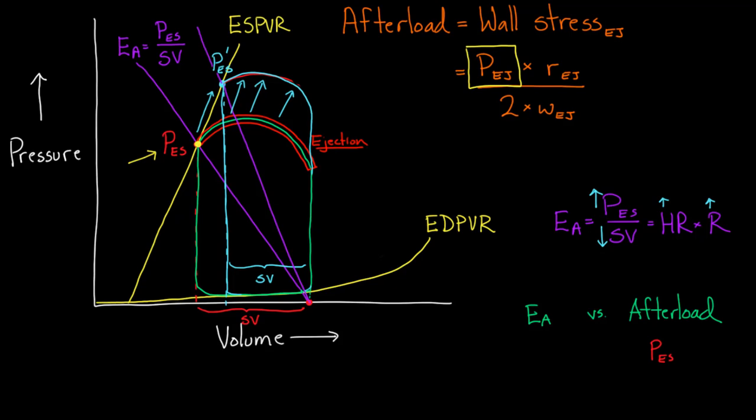If afterload is pressure at end-systole as our marker—and I should put that in quotes because the definition of afterload is much more than just that—then EA includes the end-systolic pressure but also includes stroke volume. One is pressure over volume, the other is just pressure. Many things affect end-systolic pressure, including contractility and preload. Many things affect afterload.